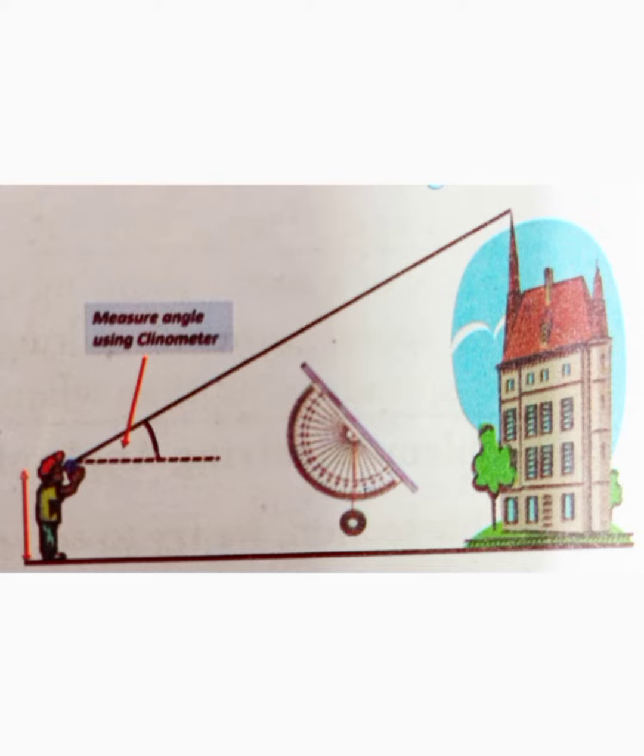Measure the distance from your eye level to the ground, and from your foot to the base of the object that you are measuring—call it y. Make a sketch of your measurements.